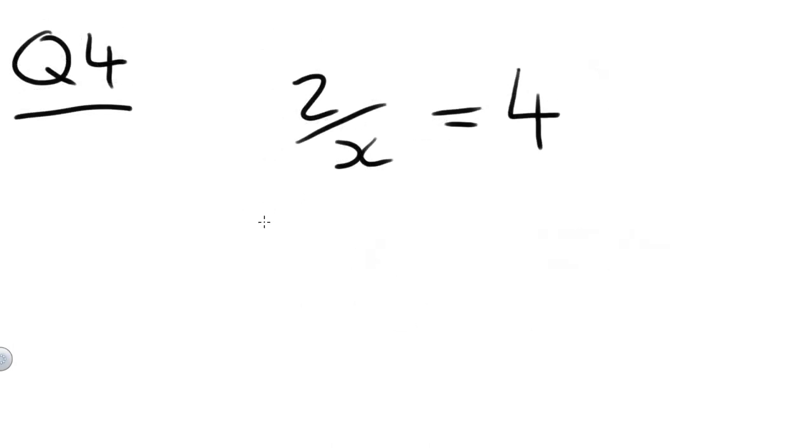Question 4. What if this time we have X on the bottom of the fraction? So we're dividing by X. 2 over X. 2 divided by X equals 4. In this situation, we can't do anything with the 2. We have to deal with the X first. So to get rid of that X, the opposite of divide by X is multiply by X. So do that to both sides.